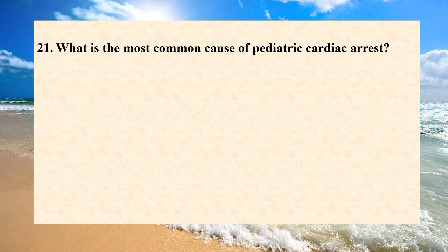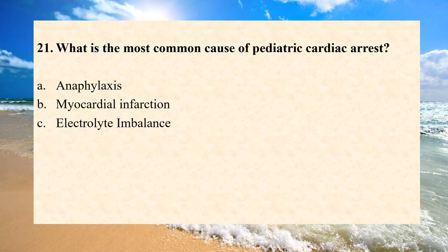What is the most common cause of paediatric cardiac arrest? A. Anaphylaxis. B. Myocardial infarction. C. Electrolyte imbalance. D. Hypoxia. Answer is D. Hypoxia. Hypoxia related to respiratory distress is the cause of the majority of cardiac arrests that occur in the paediatric population.